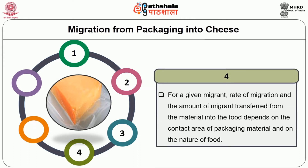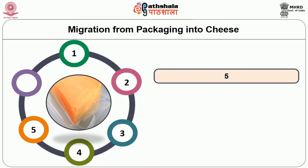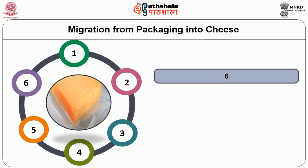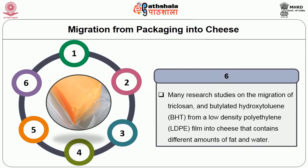For the given migrant, the rate of migration and the amount of migrant transferred from the material into the food depends on the contact area of the packaging material and on the nature of food. Polyolefins and mainly polyethylene show the highest migration rates among the plastics for most additives. Many research studies focus on the migration of triclosan and butylated hydroxytoluene from a low density polyethylene film into cheese containing different amounts of fat and water.